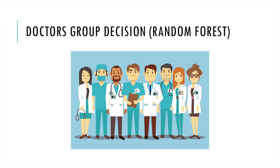Another hospital thinks this doctor may not be efficient enough to deal with the patient's problem, so they use group decision-making. They find several very famous doctors, and each doctor uses their own decision tree to judge what the patient's problem is. At last they aggregate all their decisions and make it the final result. So this is the random forest algorithm.